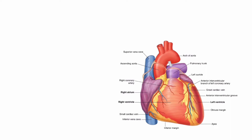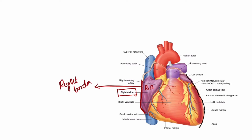To summarize the borders: the right border is formed by the right atrium; the left border is formed by the left auricle and the left ventricle; and the inferior border is formed by the right ventricle and the left ventricle. That's all about the borders.